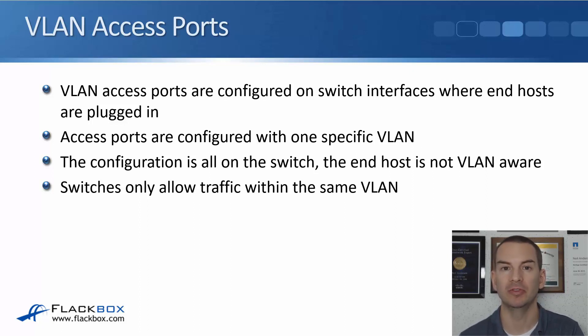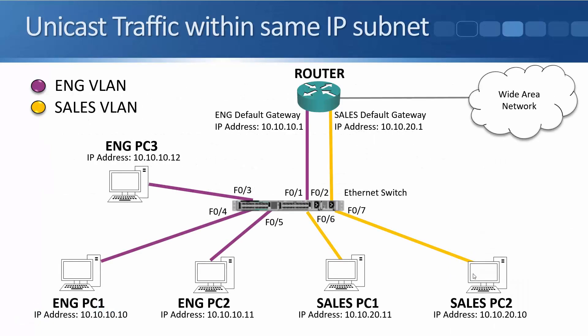Switches only allow traffic within the same VLAN — that's a benefit we get from configuring VLANs. They segment our campus LAN into smaller broadcast domains. We'll have an engineering VLAN and a sales VLAN. All engineering PCs and the router interface in the engineering IP subnet go into the engineering VLAN, and all sales PCs and the router interface for the sales subnet go into the sales VLAN. When sending unicast traffic within the same IP subnet, for example from sales PC2 to sales PC1, the traffic comes into the switch and is forwarded out the correct port.